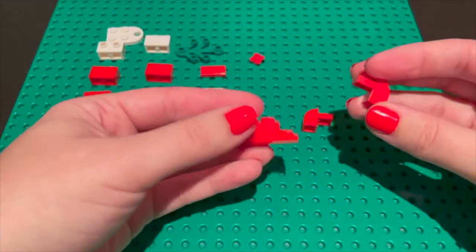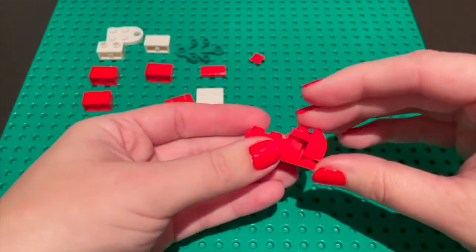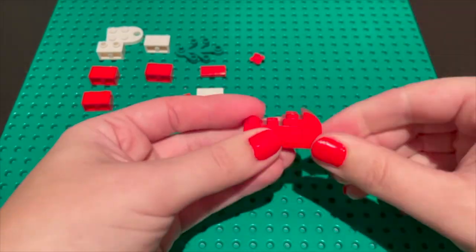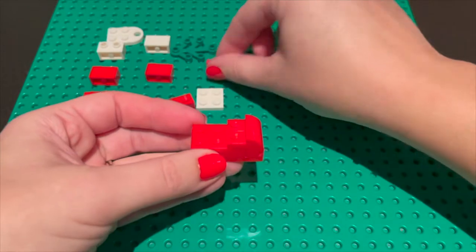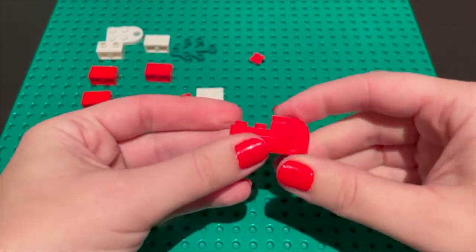Next you'll need two of these curved bricks to put on the end of the stocking to make the toe. Then you're going to take a one by two tile and put it on top of the studs of the curved bricks.